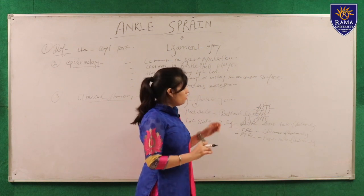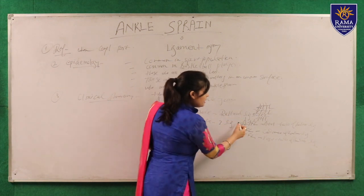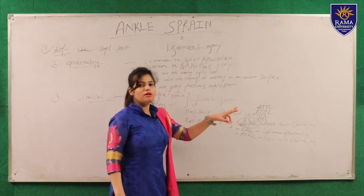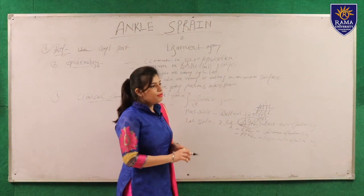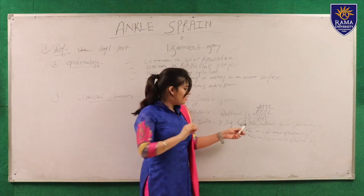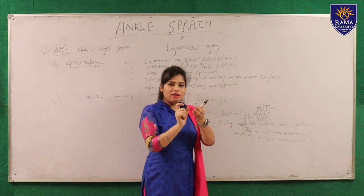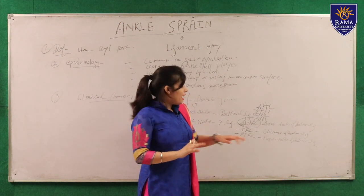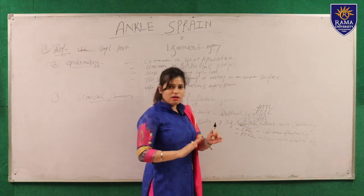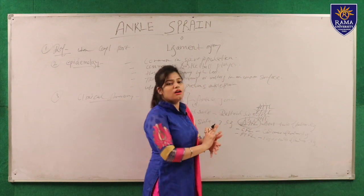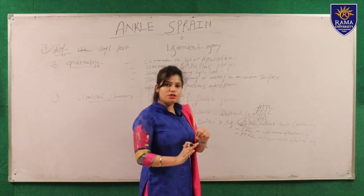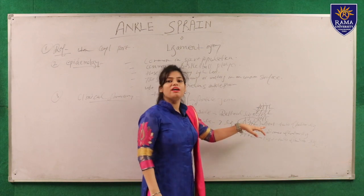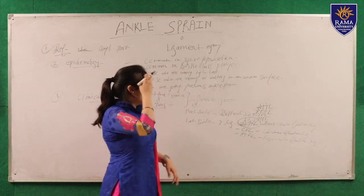The most common injury in ankle sprain occurs at the ATFL — the anterior talofibular ligament. This is because the ATFL is a very short ligament giving stability to the anterior side. When the foot goes into inversion and plantar flexion, injury to this ligament occurs. Both the medial and lateral ligaments give stability to the joint.